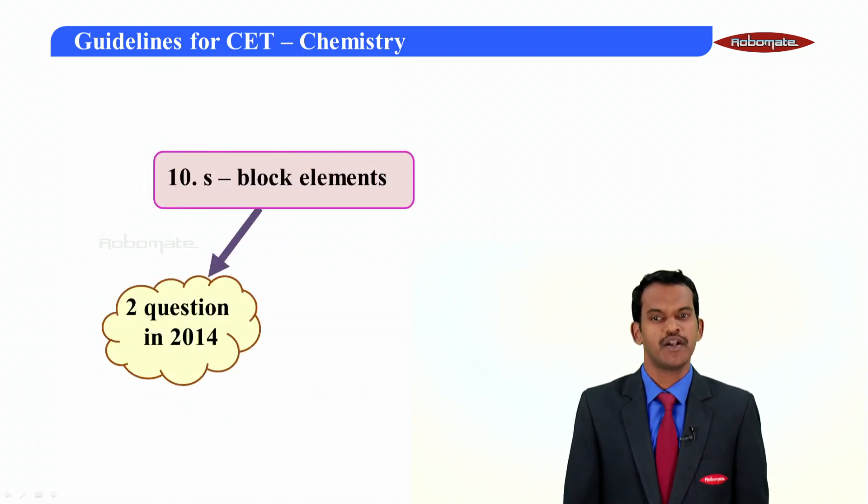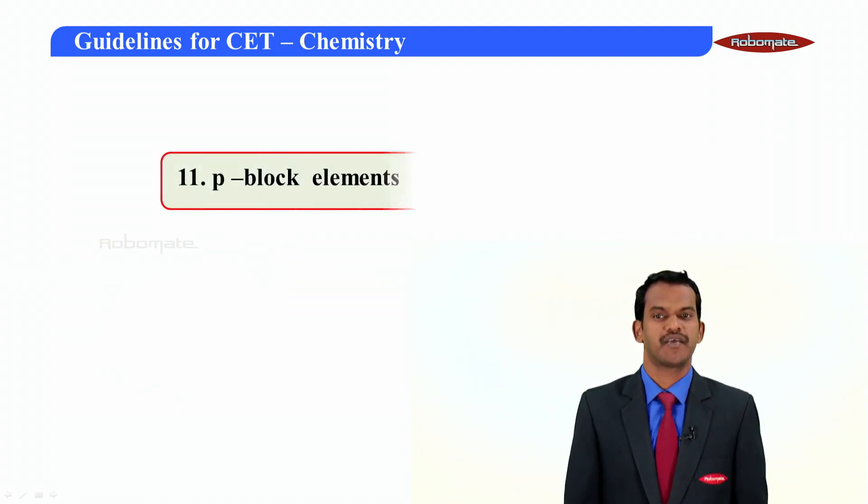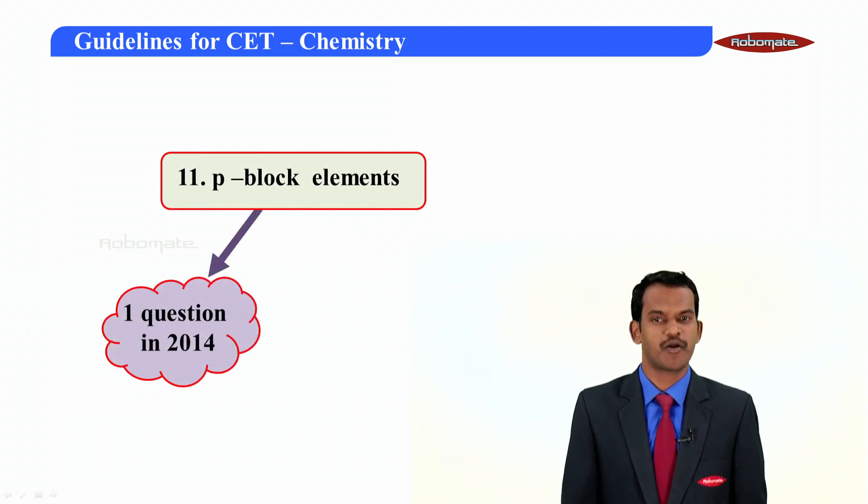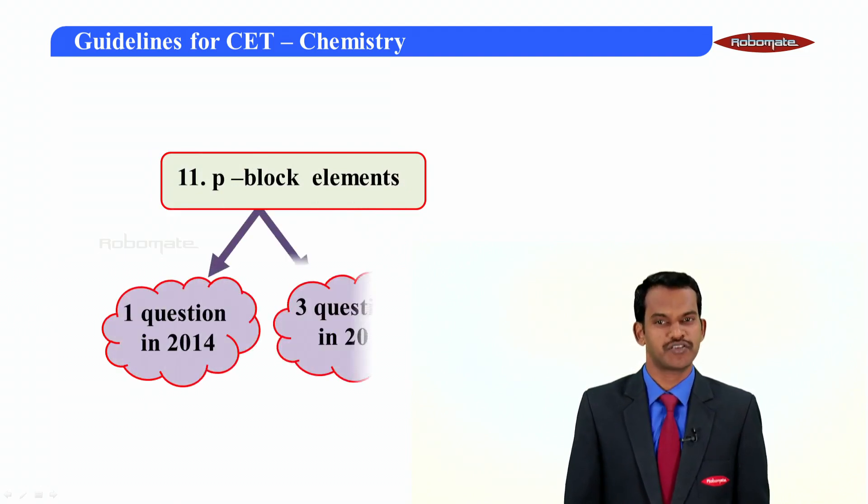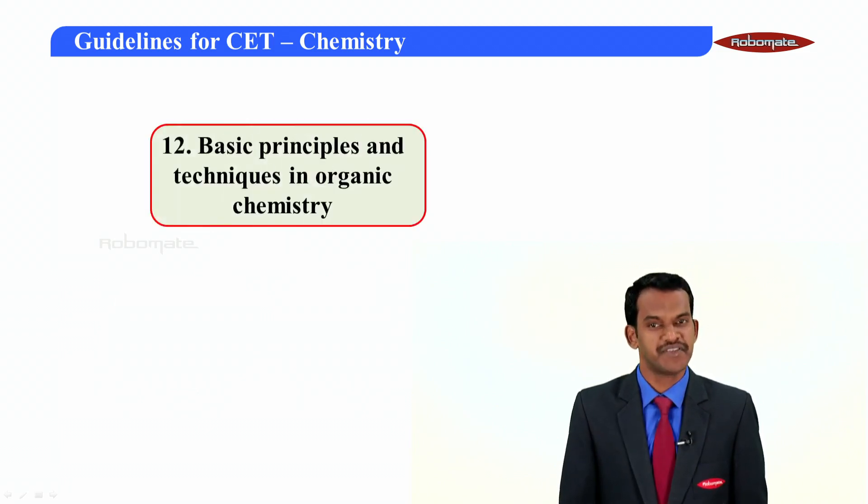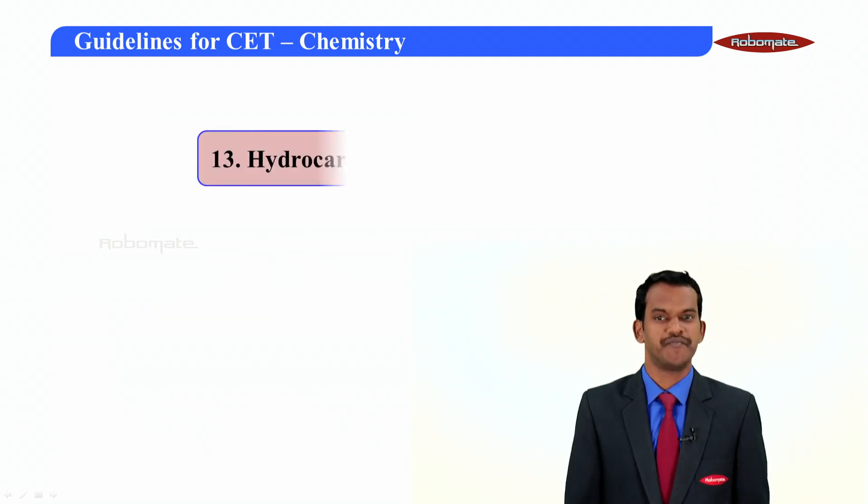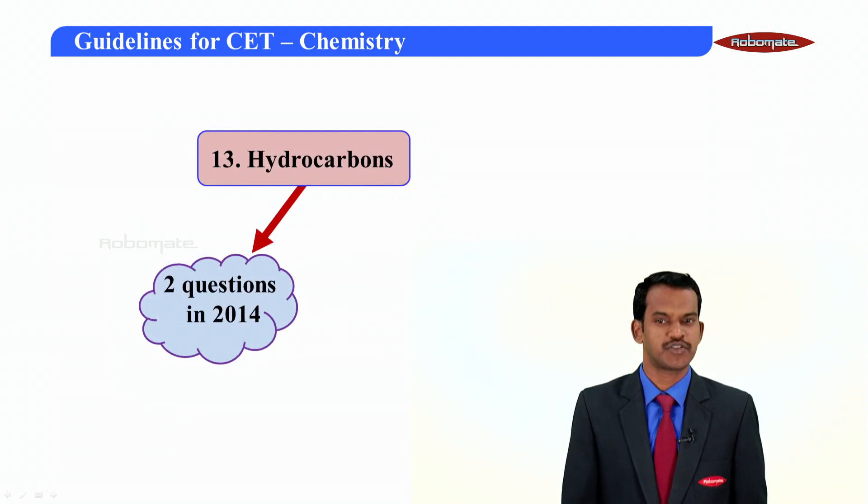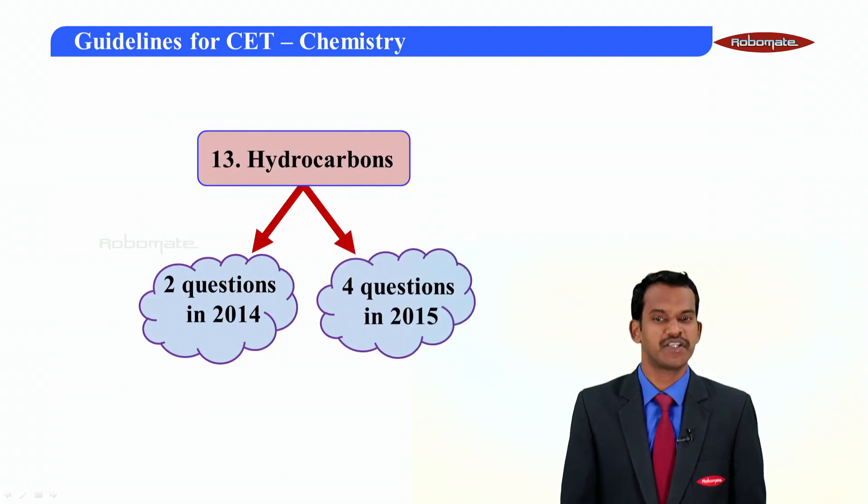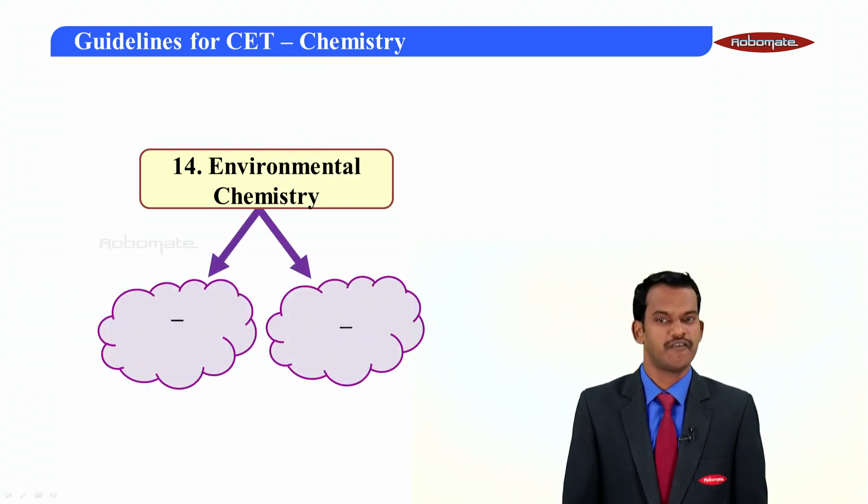Ninth one, hydrogen - no questions asked in 2014 and in 2015 there are two questions appeared from this topic. S block elements, the next topic - two questions in 2014 and two questions in 2015. P block elements - some of the P block elements what you study in the first PUC syllabus - one question in 2014 and three questions in 2015. Some basic principles and techniques in organic chemistry - no questions asked in 2014 whereas one question asked in 2015. Hydrocarbons - two questions in 2014 and four questions in 2015. Environmental chemistry, the last chapter of first PUC syllabus - questions not asked in both 2014 and 2015.